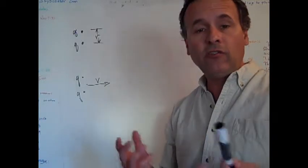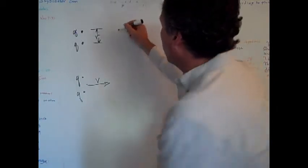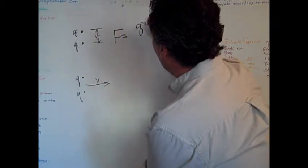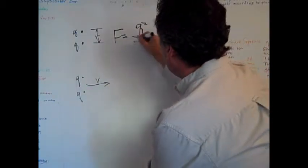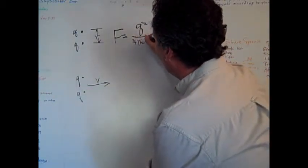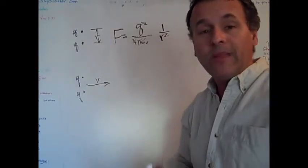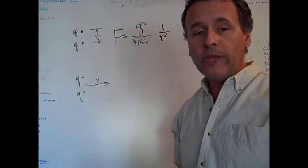In the first case, since they're like charges, they push each other away with a force like this. Force goes as the product of the two charges, but since they're the same, it's Q squared divided by some constant you don't need to worry about times one over the distance of separation squared. That just means that the farther apart they are, the weaker the force between them.